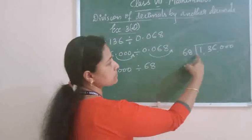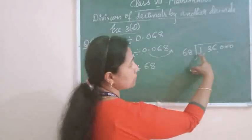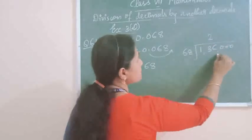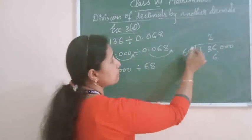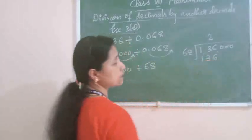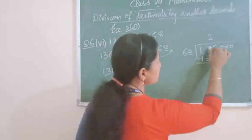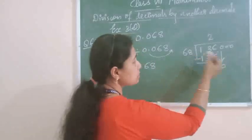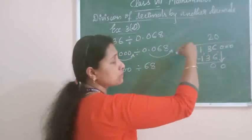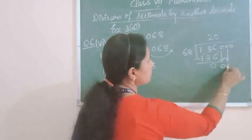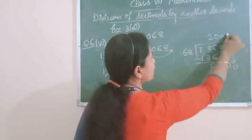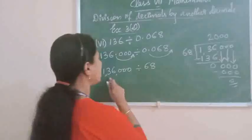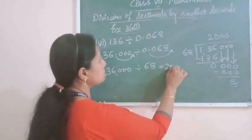1 is smaller than 68, and 13 is also smaller than 68, so you have to take 136. 136 divided by 68 — 68 twos are 136. Subtraction: 136 minus 136 is 0. Next digit is 0, which is smaller than 68 — it is not possible to divide, so we write 0 in the quotient. Next digit is also 0, so we write 0. Then next is also 0, so we write 0 again. So after doing the division, you got the answer 2000. 136,000 divided by 68 equals 2000.